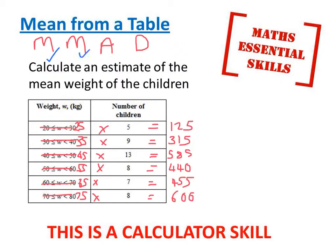I can tick that skill off. The A stands for add. Let's add up all the totals we've just worked out. 125 add 315 add 585 add 440 add 455 add 600, which gives me a total of 2520. I can tick off that skill.